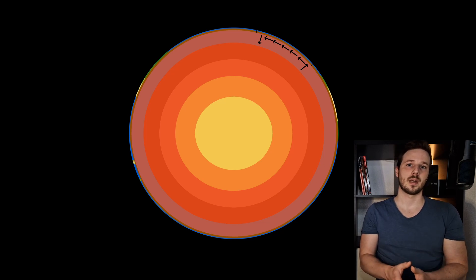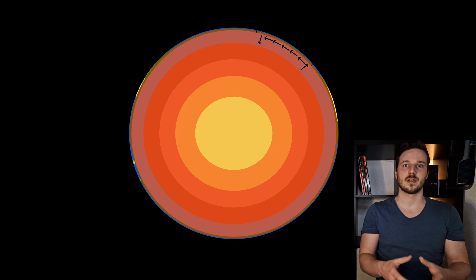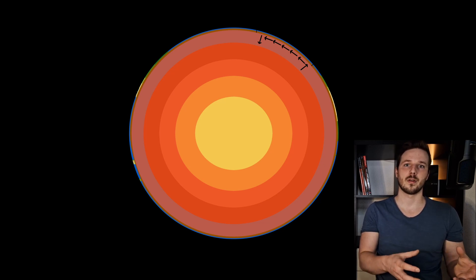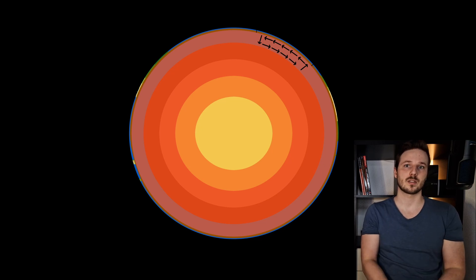At the place where the magma flows towards the earth's crust there is a difference in pressure. Now the cold magma tries to flow within the direction of the hot magma.